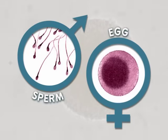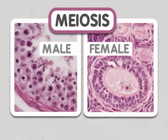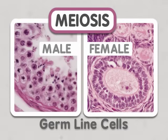Gametes are formed through a process called meiosis. The cells that undergo meiosis to produce the gametes are called germline cells.